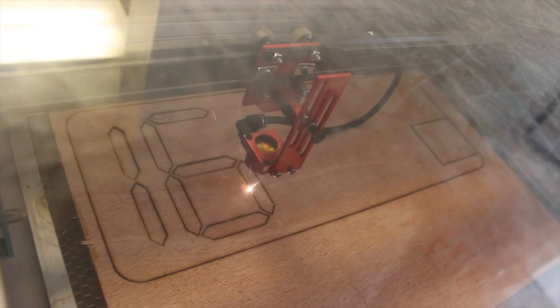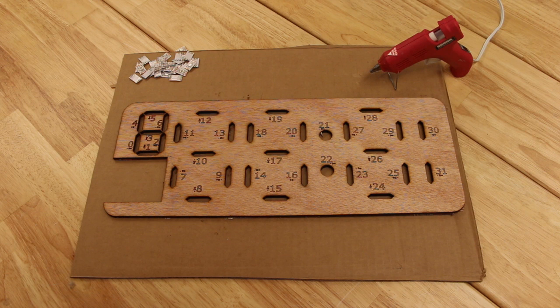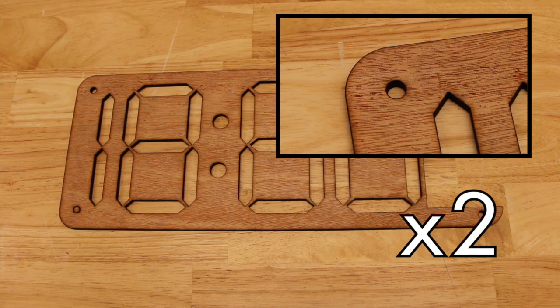Cut the following layers: one bottom, one bumper, one neopixel assembly layer, two of the digit layer with the small hole for the bolt.